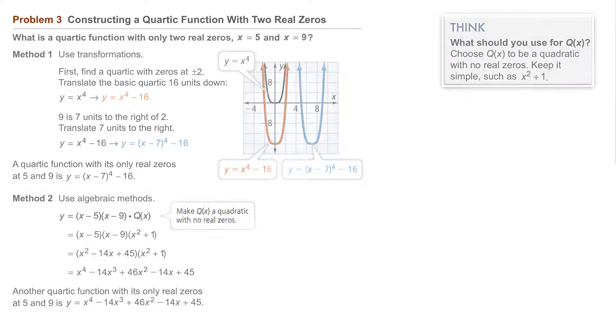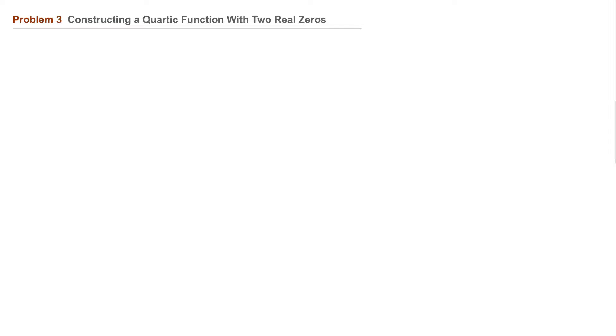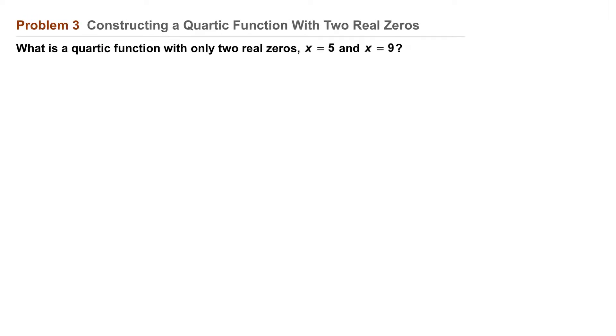Problem 3: Constructing a quartic function with two real zeros. What is a quartic function with only two real zeros, x equals 5 and x equals 9?